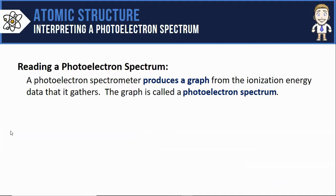So a photoelectron spectrometer produces a graph from those ionization energy data that it gathers. And this graph has a name, it's called the photoelectron spectrum.